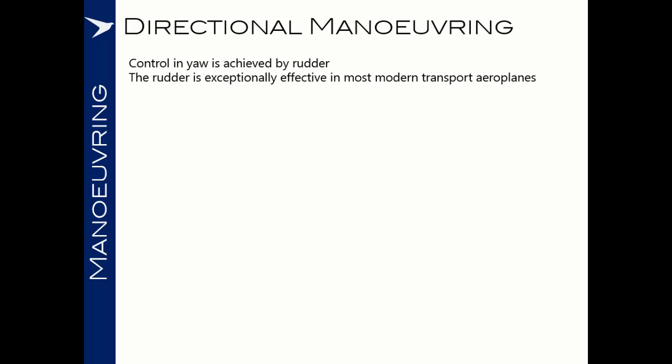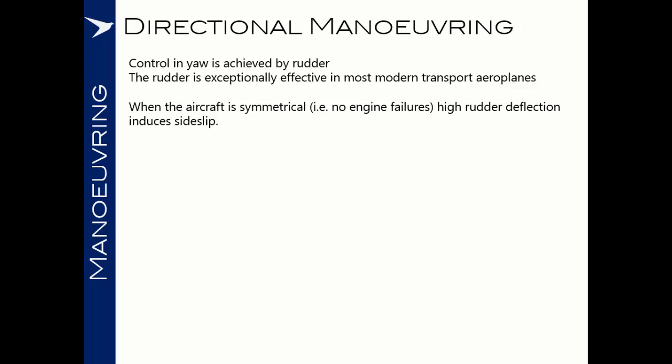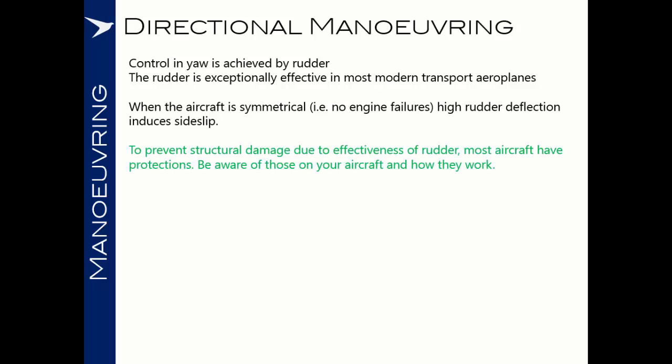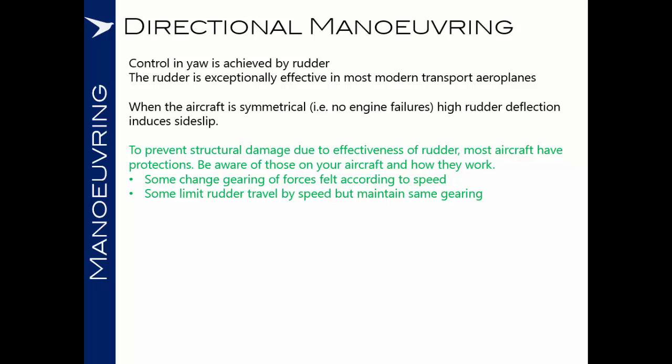Directional maneuvering is achieved by rudder. The rudder in most modern transport aircraft is exceptionally effective, and when the aircraft is symmetrical with no engine failures, a high rudder deflection will induce sideslip with the risks already discussed. To prevent structural damage due to rudder effectiveness, most aircraft have protections — be aware of your aircraft type and how they work. The load factors from a maximum rudder deflection at anything but slow speed could be enough to cause the tail to detach. Some aircraft change the gearing of pedal forces or limit rudder travel with speed. In any case, be very cautious of applying rudder during upset recovery.